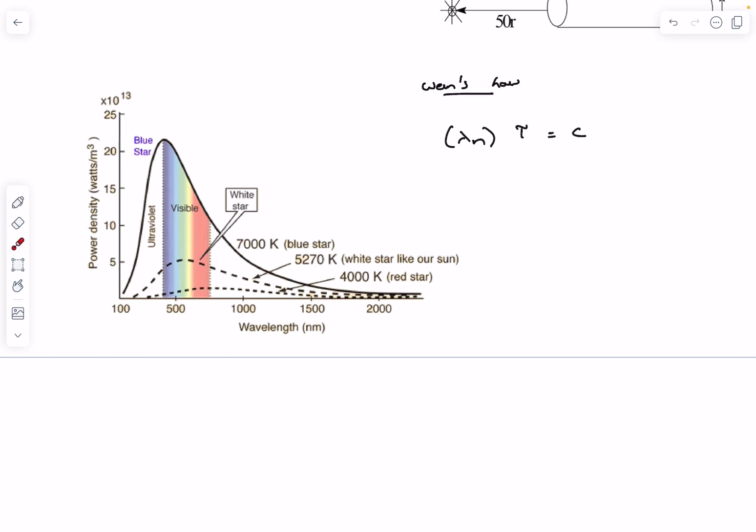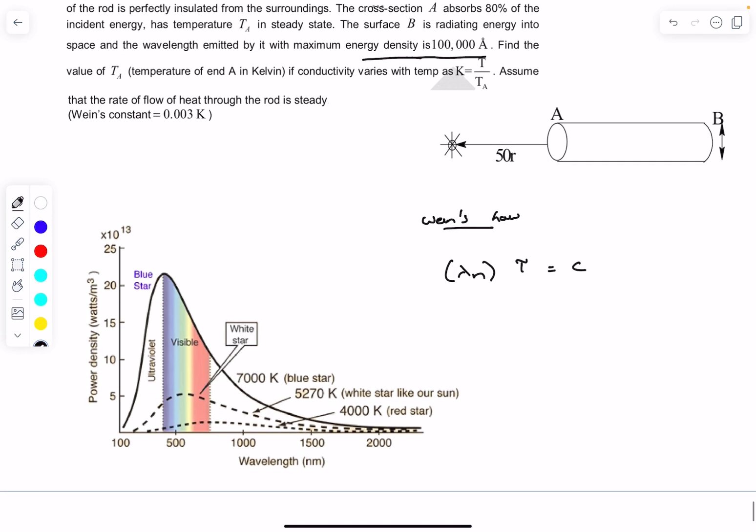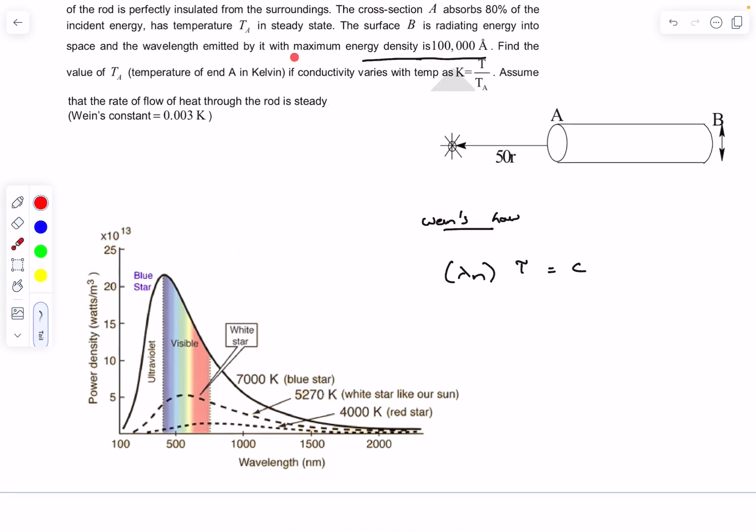Essentially what Wien's Law says is that the wavelength of light associated with the peak is inversely proportional to the temperature. So as you can see, as the temperature is increasing, the wavelength associated with the peaks are decreasing. Here we have given lambda M as 100,000 angstrom. So we can say 10^5 times 10^-10 converted into SI units multiplied with the temperature at point B gives the Wien's constant, which is given to be 0.003. And from here, the temperature at the end B turns out to be 300 Kelvin.